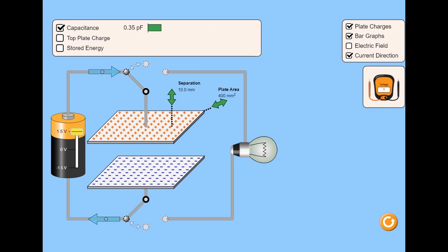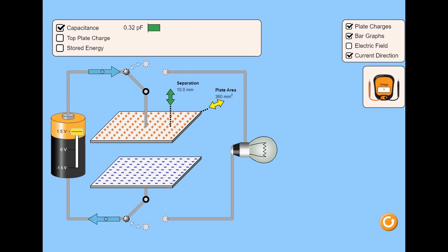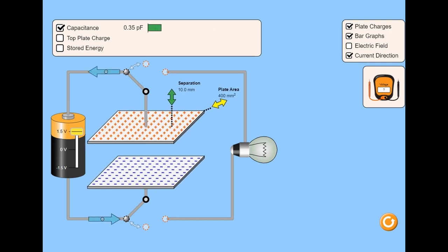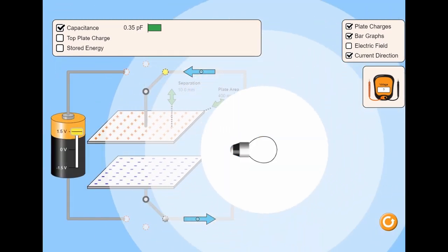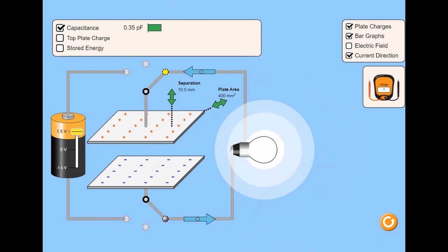In this simulation, you will take a deeper look at capacitors and explore the relationships between the capacitance charge, voltage, and stored energy. Connect a charged capacitor to a light bulb and observe a discharging RC circuit.